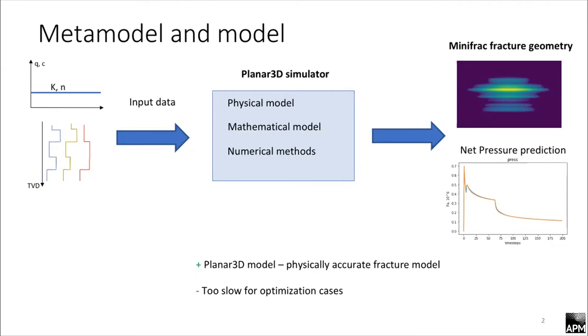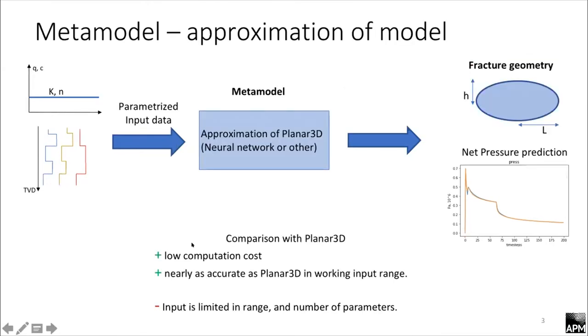However, this model is too slow for optimization cases. It's necessary to create a model that is as accurate as the planar 3D simulator model, but hundreds of times faster. A good way to do this is to approximate the planar 3D simulator model using machine learning. We call this approximation a metamodel.